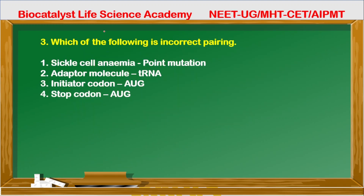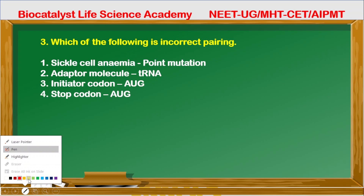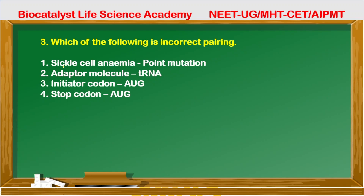Question 3: Which of the following is an incorrect pairing? Option one — sickle cell anemia is due to point mutation, where GAG is replaced by GUG and glutamic acid is replaced by valine. This is correct. The adapter molecule tRNA brings the amino acid for translation — also correct. Initiator codon AUG codes for methionine — correct.